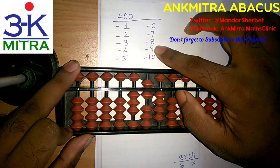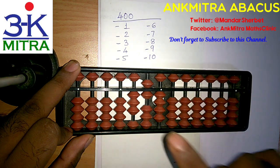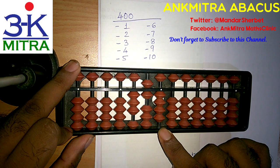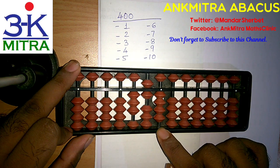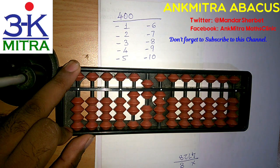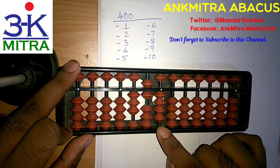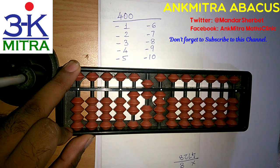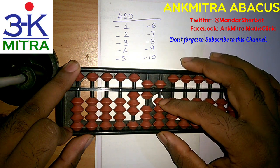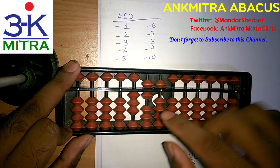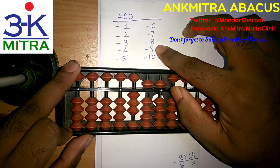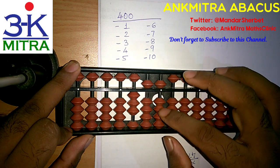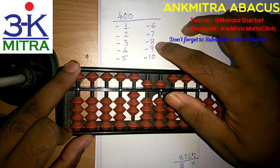Coming to the subtraction of 9 — please observe it carefully. Subtraction of 9 is to be done on the units place. We don't have 9 bits available to subtract, so we will have to use the big friend formula of minus 9 which is plus 1 minus 10. But plus 1 cannot be done directly — we don't have a single bead available to add on the units place. So we need to use the combination formula: doing plus 1 using the small friend formula, which is plus 5 minus 4, and then following it up with minus 10 on the next left rod. By doing plus 5 minus 4 we finished the plus 1 part, and then subtracting minus 10 on the next left rod we have finished the subtraction of 9.